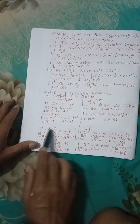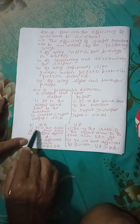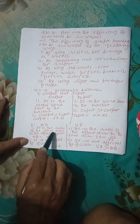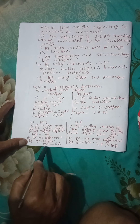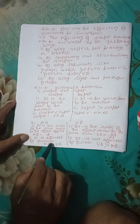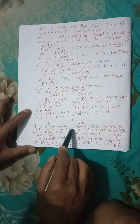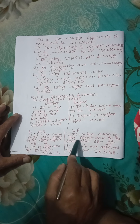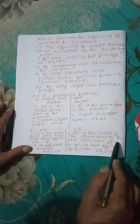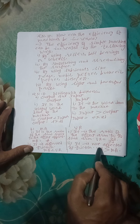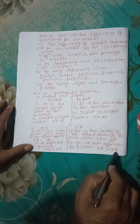B: MA and VR — that is Mechanical Advantage and Velocity Ratio. MA: It is the ratio of the Load raised to the Effort applied. Formula: MA = L / E. It is affected by friction, so MA is less than VR. VR (Velocity Ratio): It is the ratio of the Effort arm to the Load arm. Formula: VR = Ed / Ld. It is not affected by friction, so VR is always more than MA.